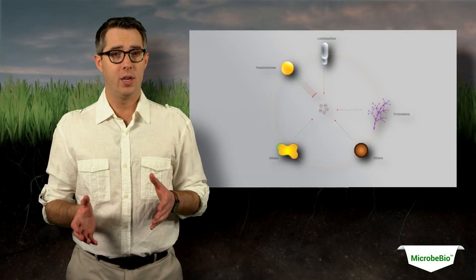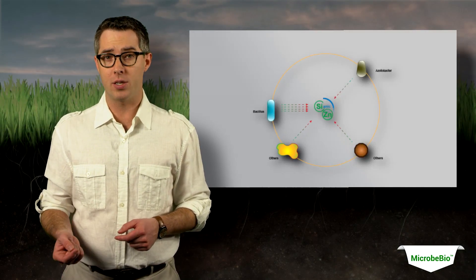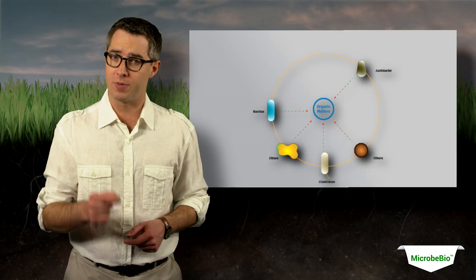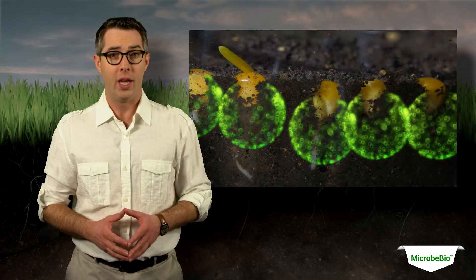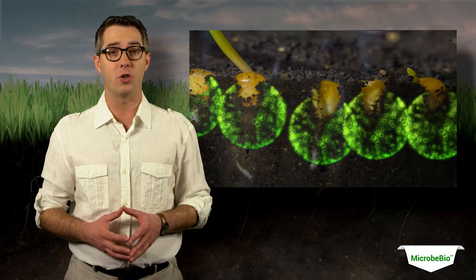One problem with this is that one kind of bacteria doesn't necessarily release one kind of nutrient from one specific source. There are millions of different bacteria and protozoa, and they all have different jobs in releasing nutrients for plants.